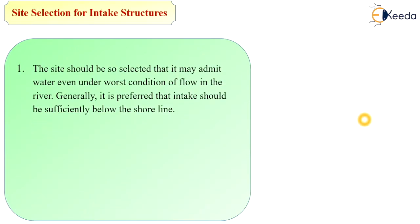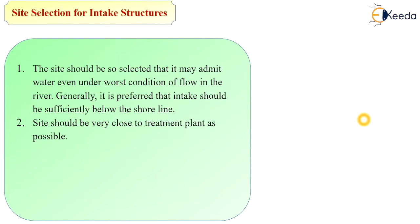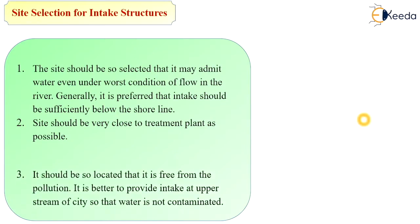Next are the site selection criteria for intake structure. The site should be selected such that it may admit water even under worst conditions of flow in the river. It is generally preferred that the intake should be sufficiently below the shoreline. The site should be as close to the treatment plant as possible so that we can reduce the cost of conveying water through the pipe.